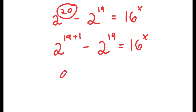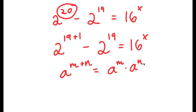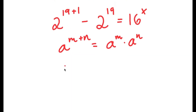Now if I have something in the form a to the power of m plus n, this is equal to a to the power of m times a to the power of n. So in this case, I have 2 to the power of 19 plus 1, and this is going to equal 2 to the power of 19 times 2 to the power of 1.